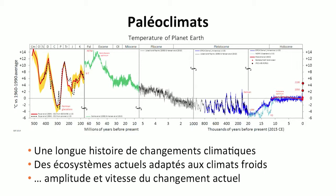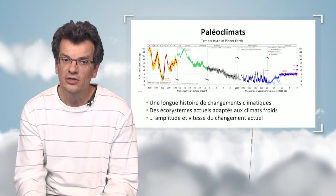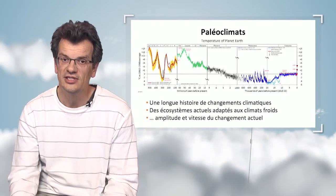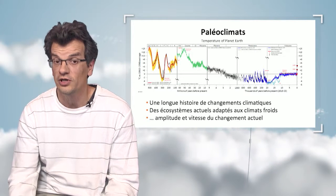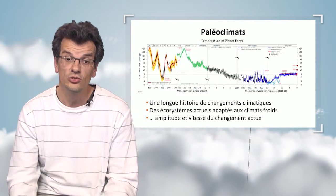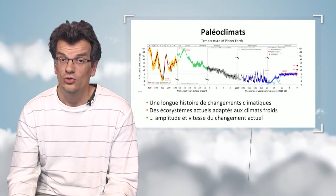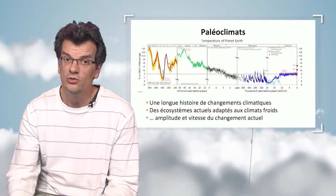And 20,000 years ago, we have variations that correspond to ice sheets over northern Europe and Canada. Our recent period in the evolution of ecosystems, on a time scale of a few million years, is rather a cold period, and our ecosystems are adjusted to cold periods.